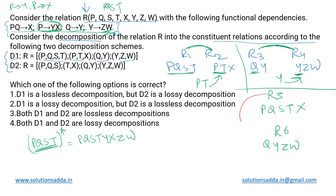Now looking at R5 and R6, the common attribute is Q. In R6, Q derives Y and Y derives ZW, so Q is the candidate key for R6. Since Q, the common attribute, forms the candidate key in one of them, this decomposition is also lossless. Merging R5 and R6 gives back the original relation R. Therefore, decomposition scheme D1 is lossless.